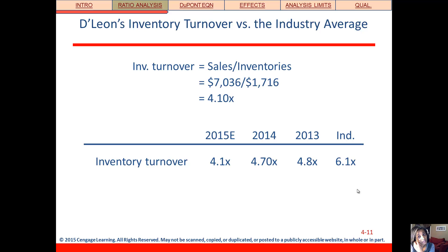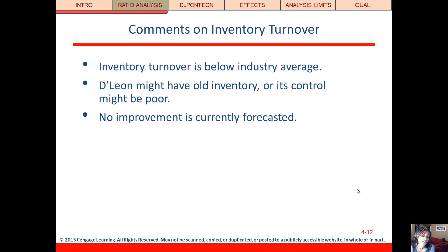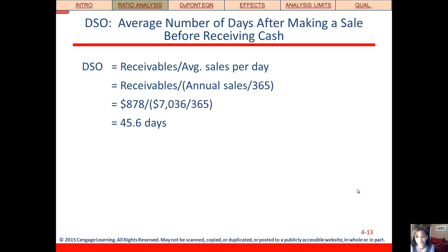Now let's look at asset management. First is inventory turnover — how many times do they turn over their inventory, meaning they sell everything off four times a year? That's actually trending down, which is not good. We want all of these turnover numbers to be as high as possible, and it's very low compared to the industry, and has been for the last three years. So it's below industry average, they've got some problems — maybe they've picked up some old inventory or they're not managing it very well, and the outlook doesn't look good in that respect either.